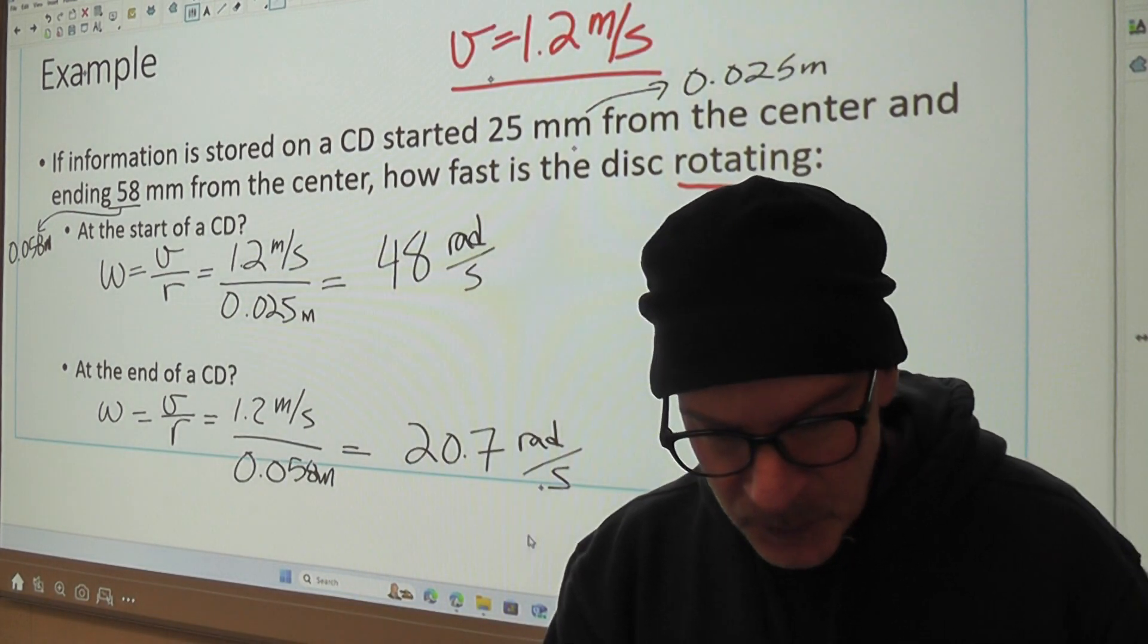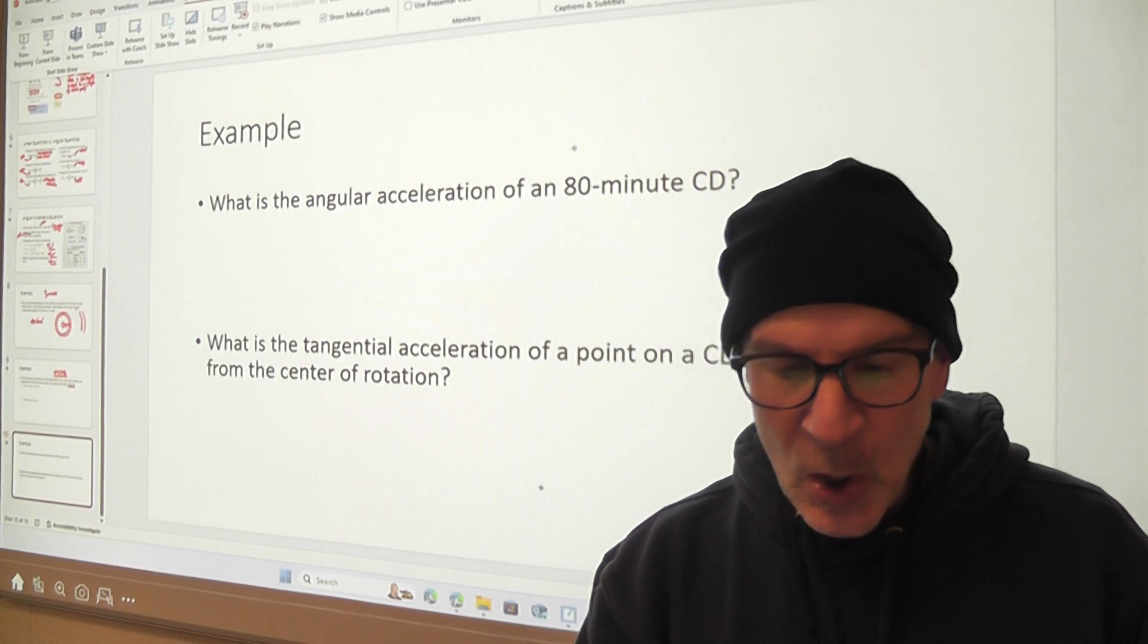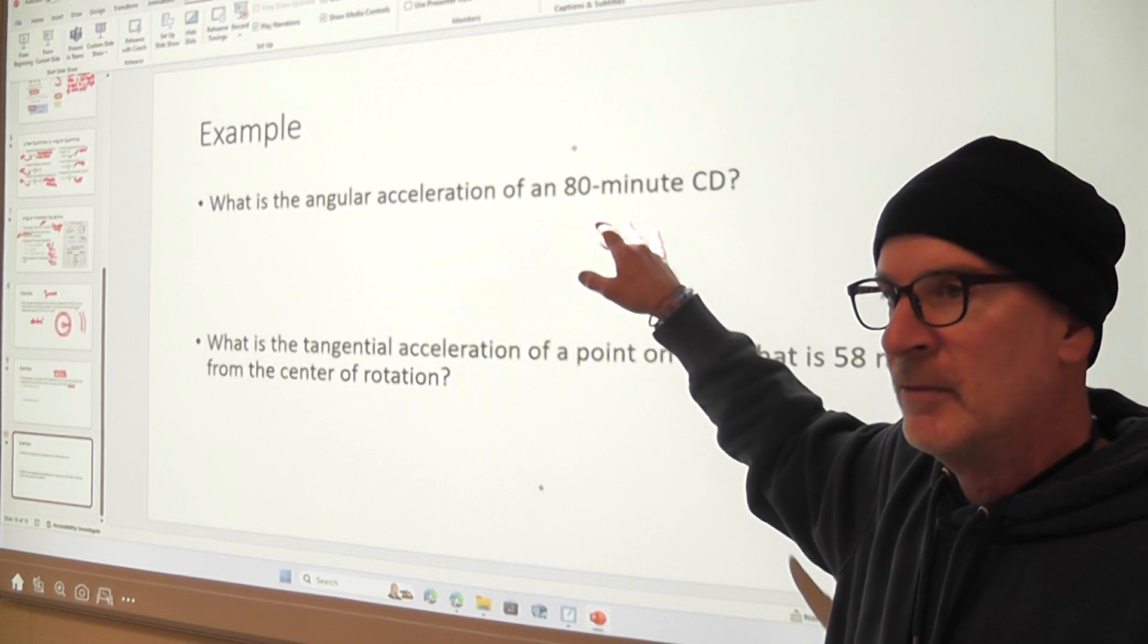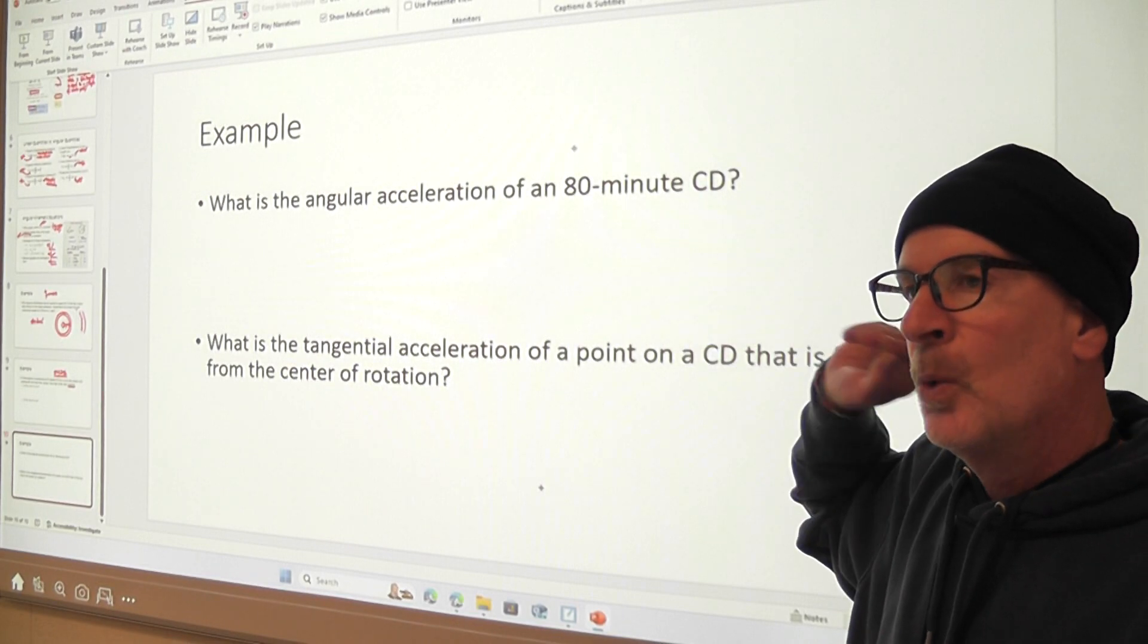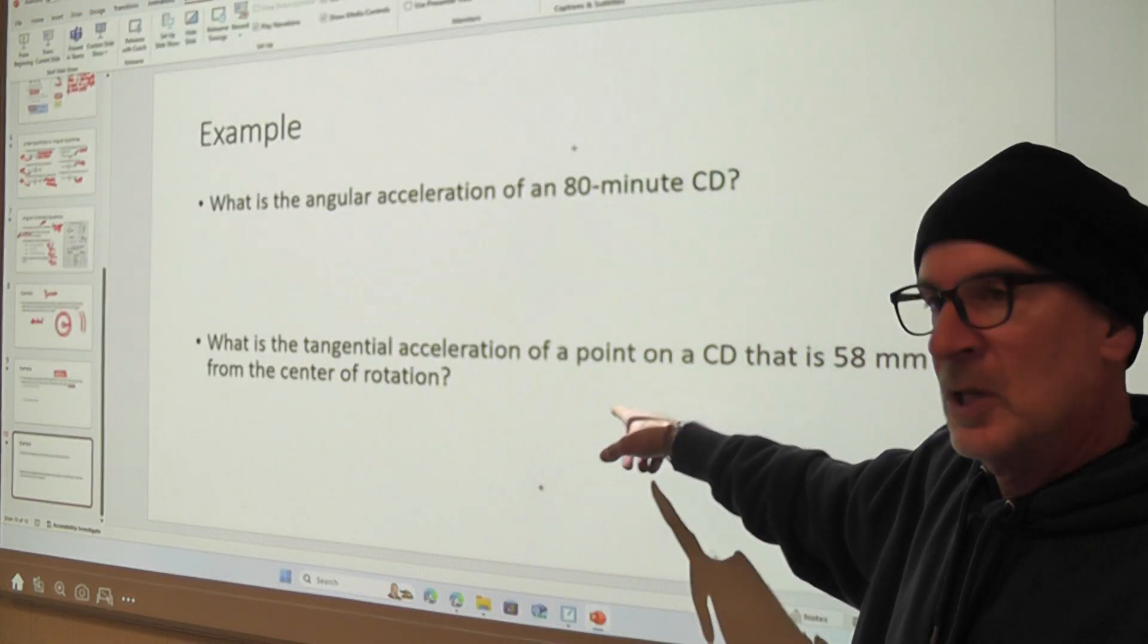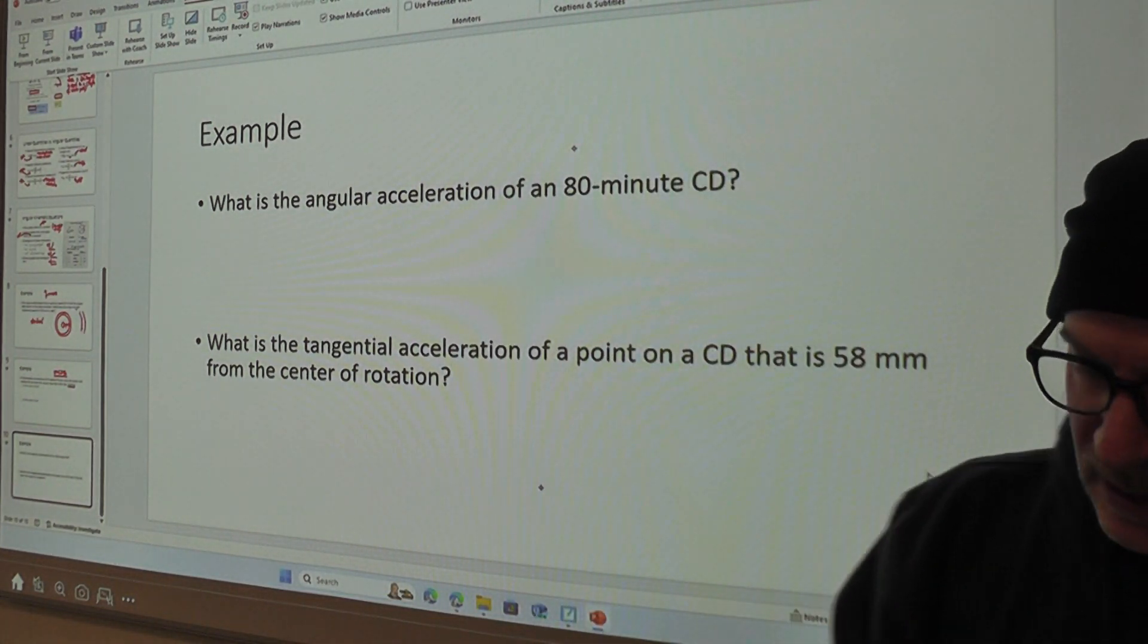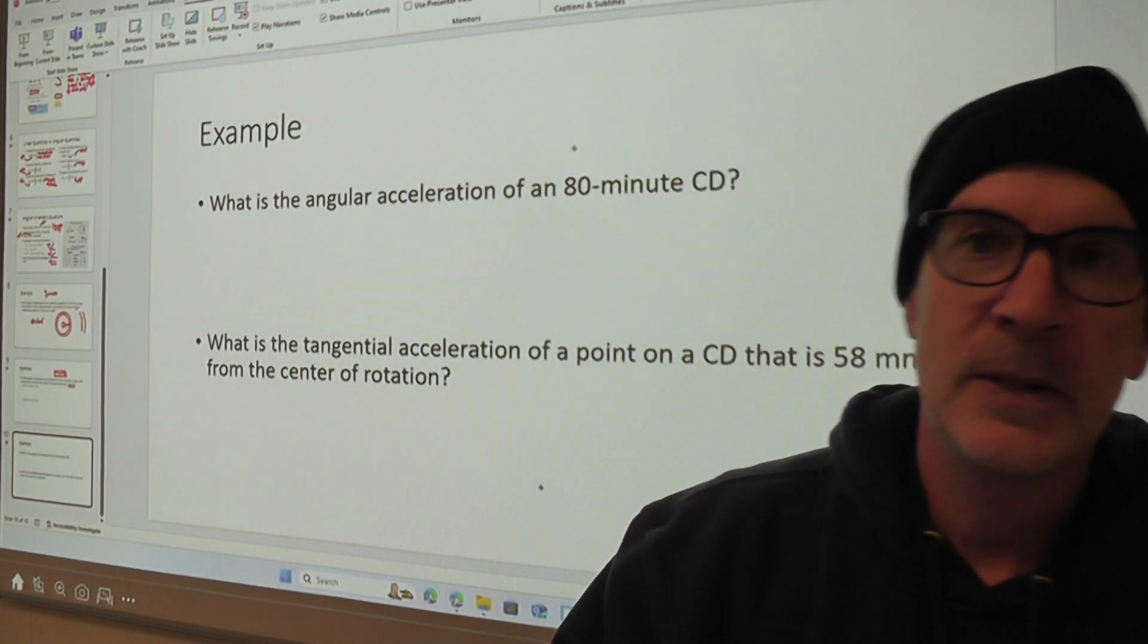Which leads us to our next challenge, which is, what is the angular acceleration of an 80-minute CD? Some CDs play for like, I think, 72 minutes. Some play for 80 minutes. If we have an 80-minute long CD, what's its angular acceleration? And what is the tangential acceleration of a point that's 58 millimeters from the center of rotation, right? So that's the second set of questions here. There you go. See what you can do with that.